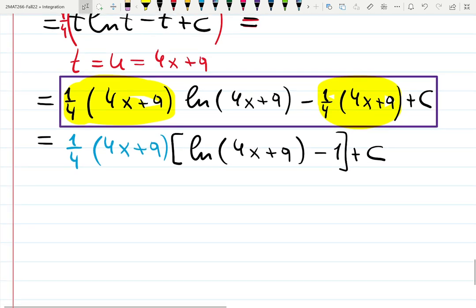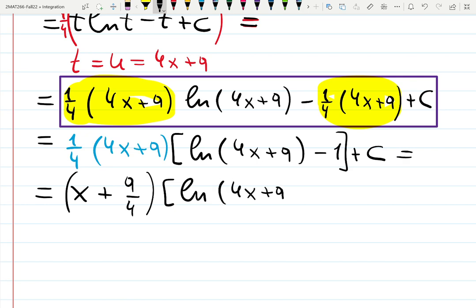Now, what they also did, they distribute one quarter inside of the blue part. So 4x over 4 gives you x, 9 gives you 9 quarters. Then it is ln 4x plus 9 minus 1 plus c. This is a very good final answer.